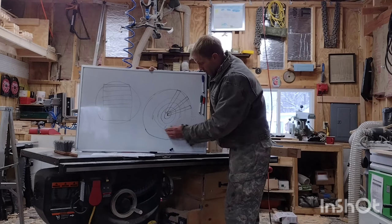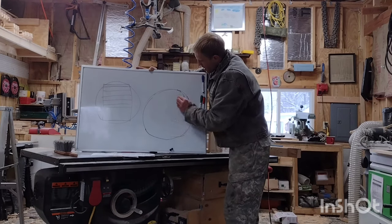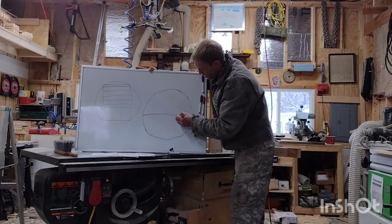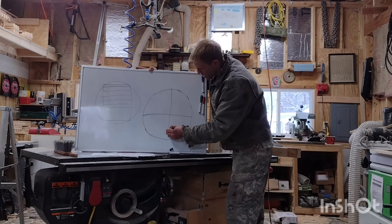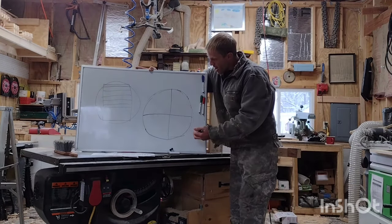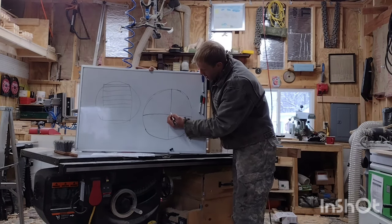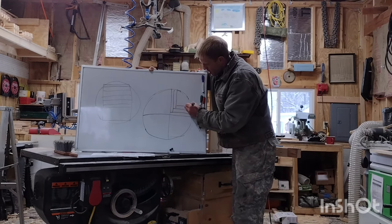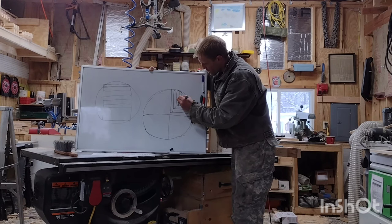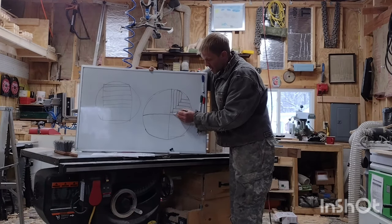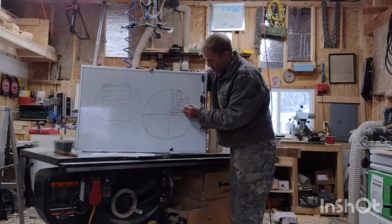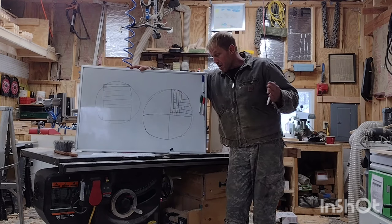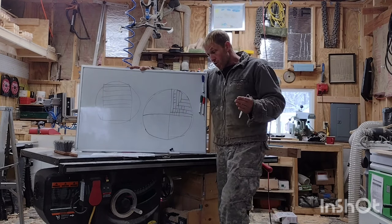Then you have quarter sawing, which is a technique, not a type of lumber. Quarter sawing is exactly what it sounds like: you quarter your log and then, working on each individual quarter, you start pulling boards out by rotating that quarter again and again to make sure you're getting the most boards with that 60 to 90 degree grain orientation. Those are your three basic types of grain sawing: rift sawing, quarter sawing, and flat sawing.